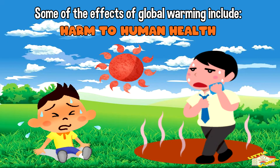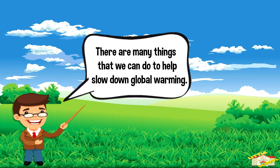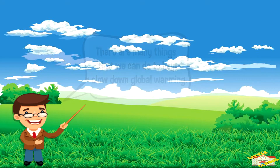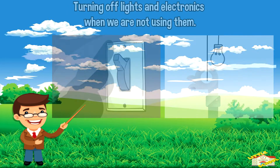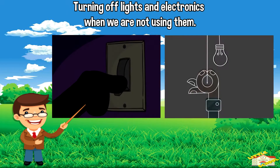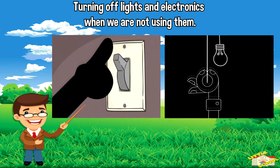Global warming also causes harm to human health, as extreme heat can cause heat stroke and other health problems. There are many things that we can do to help slow down global warming, such as turning off lights and electronics when we are not using them.